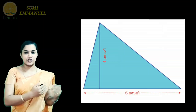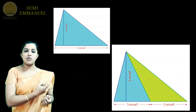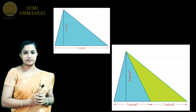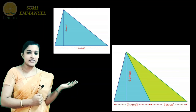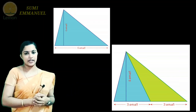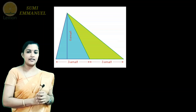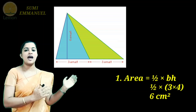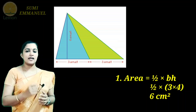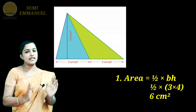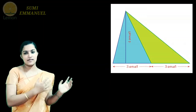The triangle has a base of 3 cm and height of 4 cm. The area is half into 3 into 4, which equals 6 cm squared. The second triangle is also 6 cm squared because the base is equal. The total area is 6 plus 6, which is 12 cm squared.